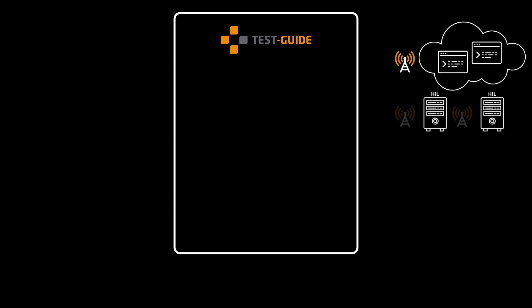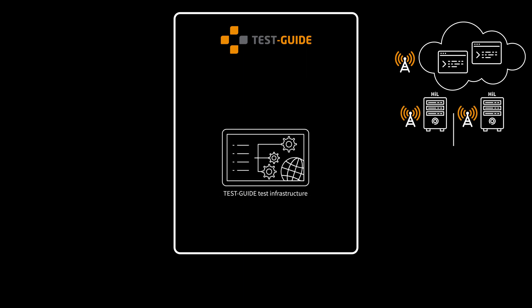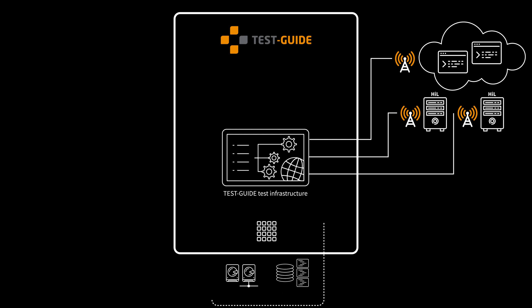I now want to give an overview about the basic workflow of the automated test execution with Test Guide. On the one hand, we have our test resources with resource adapters, which are connected to Test Guide and send their states and configurations to the Test Guide test infrastructure. On the other hand, we have our test sources, as artifacts in the Test Guide artifact management, or located on a local or network drive, or in an SCM repository.